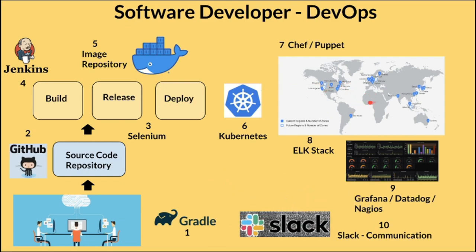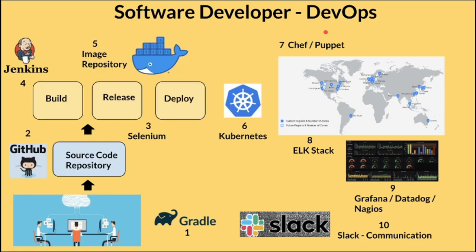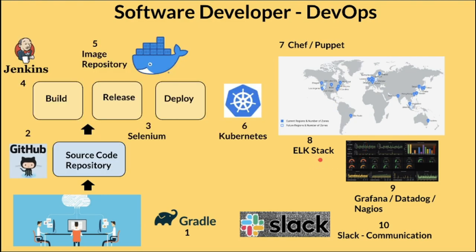Once the application is up and running, it will also be monitored using tools like Grafana, Datadog, or Nagios. As a DevOps engineer, I should have skills to create pipelines using Jenkins, TeamCity, or any other tool. I should also have skills to create and manage infrastructure in cloud environments like AWS, Azure, or Google Cloud Platform, and know how to create and manage logs using the ELK stack.